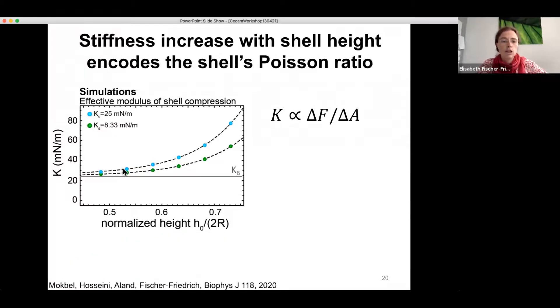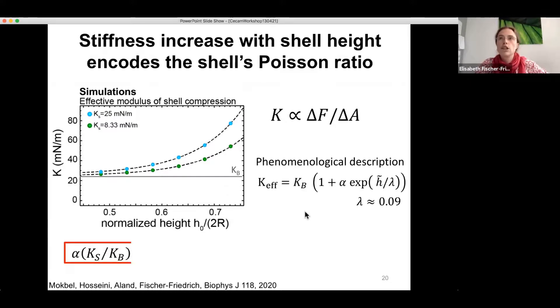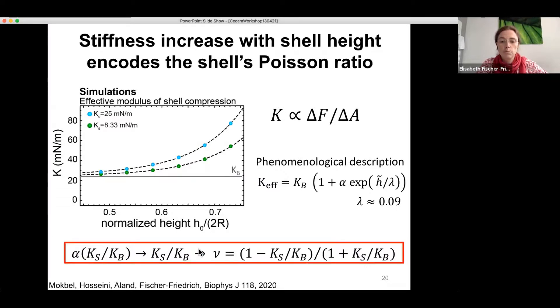And phenomenologically, this curve converges to the area bulk modulus for very low heights, as you would expect. And phenomenologically, we can capture this rise by an exponential increase of this functional shape with an amplitude alpha, which actually depends on the ratio between the area shear and the area bulk. And knowing this function, we can extract the ratio between the two parameters and thereby determine the Poisson ratio of the cortical shell.